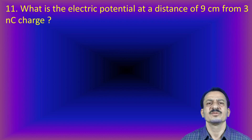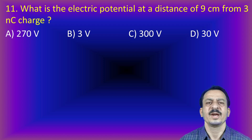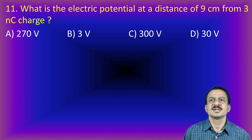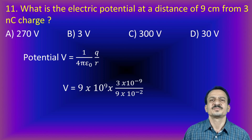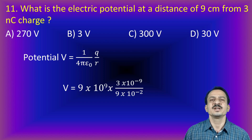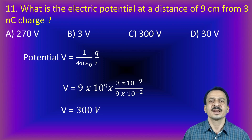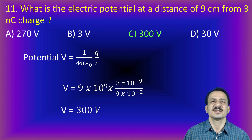Next problem: what is the electric potential at a distance of 9 cm from a 3 nanocoulomb charge? Using V = (1/4πε₀) × Q/R = 9×10⁹ × 3×10⁻⁹ / (9×10⁻²). The 10⁹ and 10⁻⁹ cancel, and the 9s cancel, leaving 3×10² = 300 volts. The answer is C.